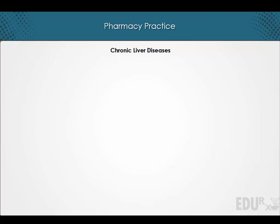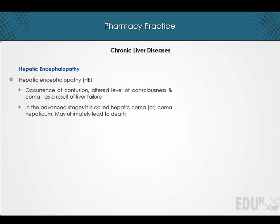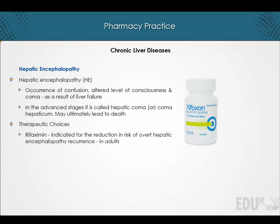Now, let's discuss hepatic encephalopathy. Hepatic encephalopathy is the occurrence of confusion, altered level of consciousness, and coma as a result of liver failure. In the advanced stages, it is called hepatic coma or coma hepaticum, and it may ultimately lead to death. The antibiotic rifaximin is indicated for the reduction in risk of overt hepatic encephalopathy recurrence in adults.